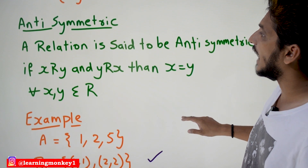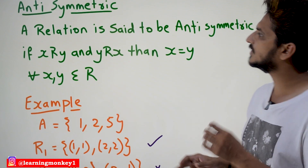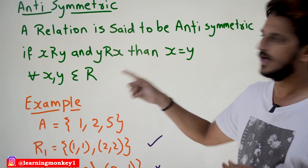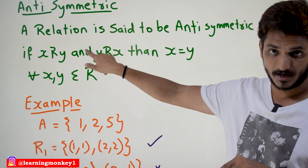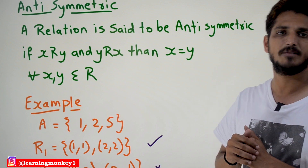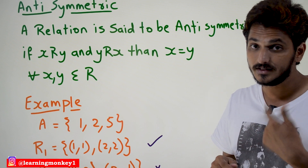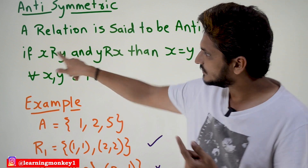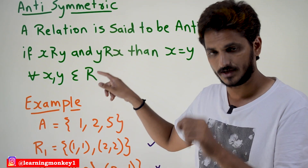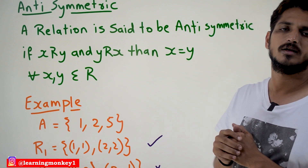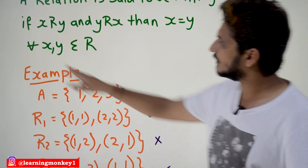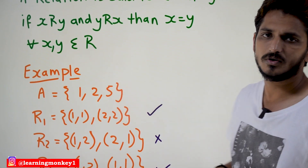Now coming to the next definition: anti-symmetric. A relation is said to be anti-symmetric when, if x relates y and y relates x, then x must equal y. This has to happen. If both x relates y and y relates x occur in our relation, then x is equal to y, for all x, y belonging to relation R.